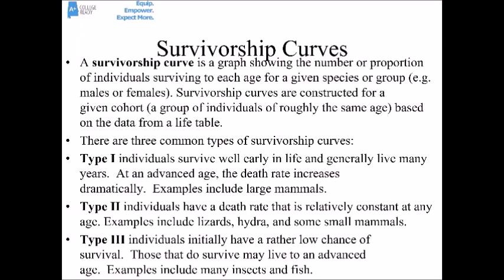Another thing that population ecologists like to talk about are survivorship curves. Survivorship curves are graphs that show the number or proportion of individuals surviving to each age for a given species or a group. They're constructed from a given cohort — a group of individuals of about the same age — and this information typically comes from a life table.